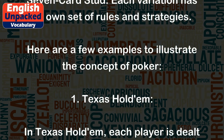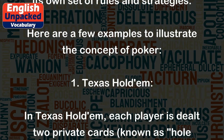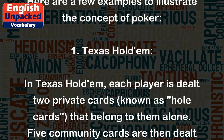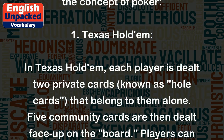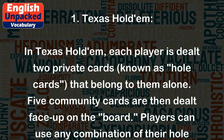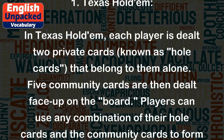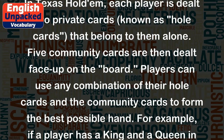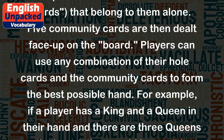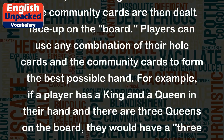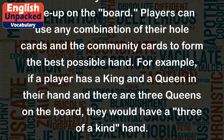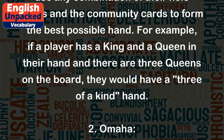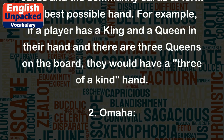1. Texas Hold'em. In Texas Hold'em, each player is dealt two private cards, known as hole cards, that belong to them alone. Five community cards are then dealt face up on the board. Players can use any combination of their hole cards and the community cards to form the best possible hand. For example, if a player has a king and a queen in their hand and there are three queens on the board, they would have a strong hand.